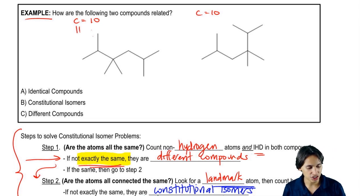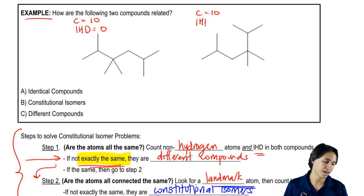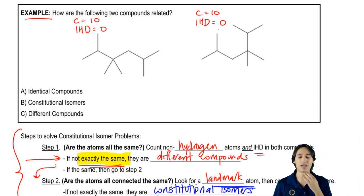Now if we calculate the IHD, the IHD for the first one is zero. There's no double bonds, there's no rings, there's no triple bonds. The IHD for the second one is also zero. So what that means is that these have the same atoms.